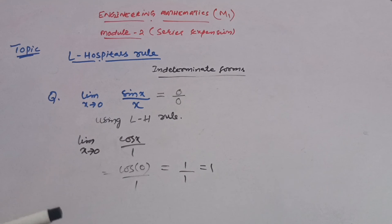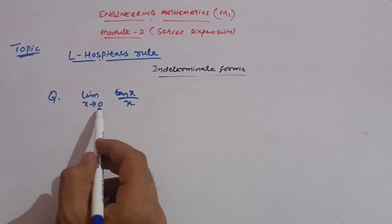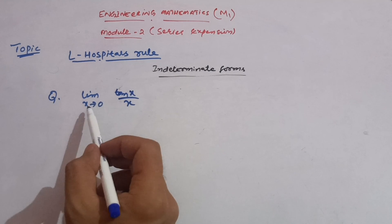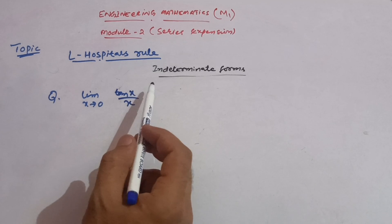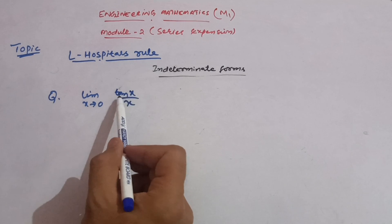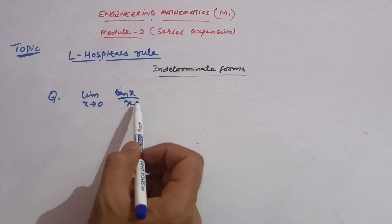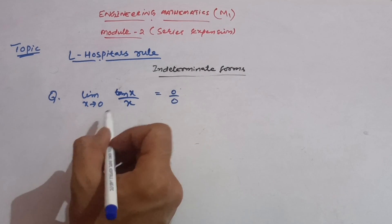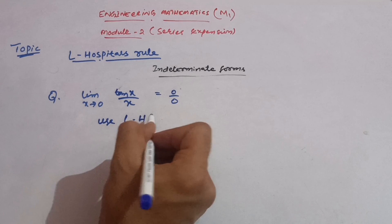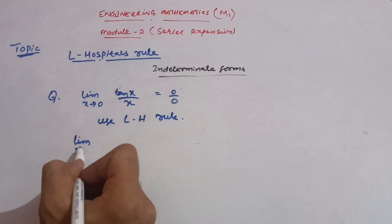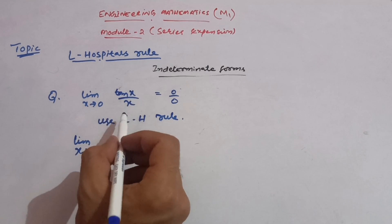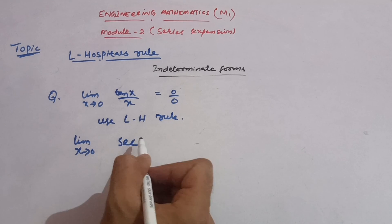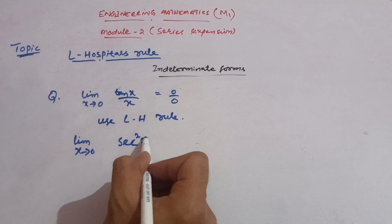It is a very simple one — you only need to focus on the differentiation part. Let us take another example: limit x tends to zero of tan(x)/x. First, put x = 0: tan(0)/0 = 0/0, which is indeterminate. So we apply L'Hôpital's rule again. We differentiate: the differentiation of tan(x) is sec²(x), and you should remember these differentiation formulas.